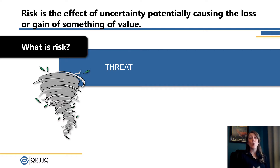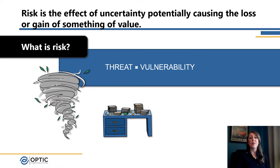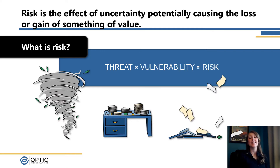We know we've got a threat — in this case we're looking at a tornado, something that's going to act on our business. We need our vulnerability, that thing that the threat will act on to exploit something within our business, and the risk itself, which in this case is our sensitive papers blowing down the street, potentially having a severe impact on our operations.